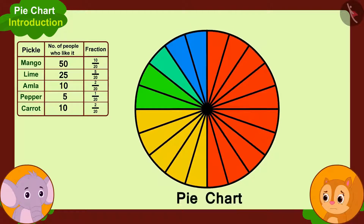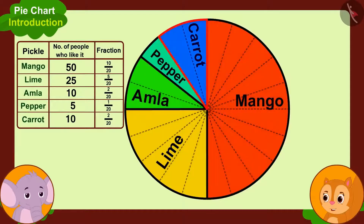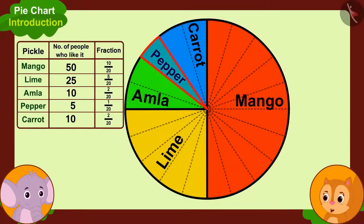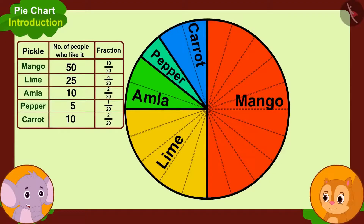'Our pie chart is ready. Wow, Appu! Now we can easily find out by looking at these parts that people like mango pickle the most, because the largest part of the pie chart shows the number of people who like mango. And this smallest part shows the people who like pepper pickle, so people who like pepper pickle are of the least number. Similar number of people like amla and carrot pickle, which means those who like these pickles are the same in number. So we have to start selling mango pickle first.'